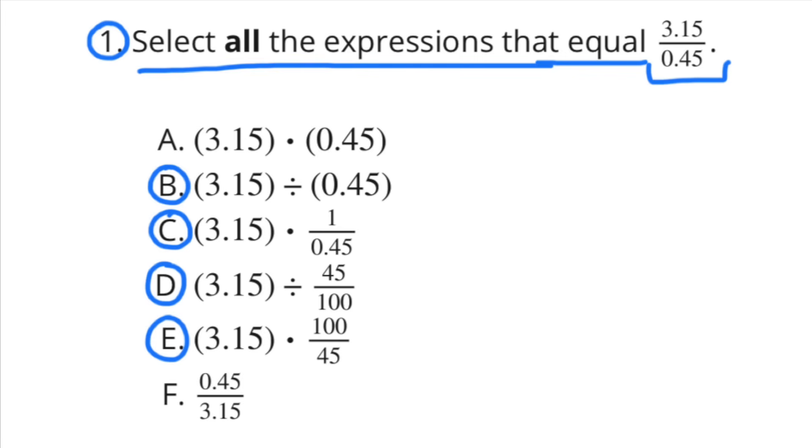3 and 15 hundredths divided by 45 over 100 is the same thing as 3 and 15 hundredths divided by 45 hundredths. So we can circle D. 3 and 15 hundredths times the reciprocal of 45 hundredths would be E. So we can circle E.